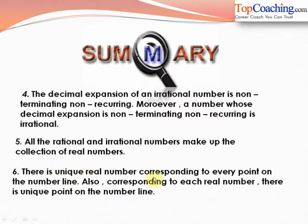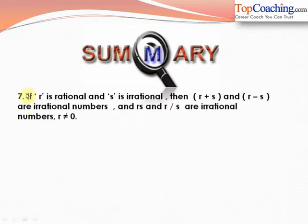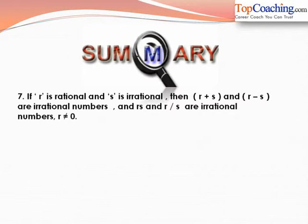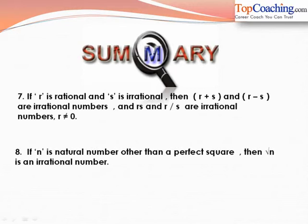There is a unique real number corresponding to every point on the number line, and corresponding to each real number there is a unique point on the number line. If r is rational and s is irrational, then r plus s, r minus s, r into s, and r by s are all irrational numbers (where r is not equal to zero). Finally, if n is a natural number other than a perfect square, then the square root of n is an irrational number.